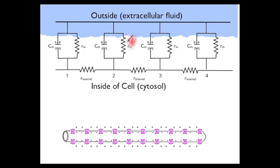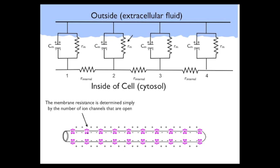The next component is the membrane resistance, which is determined simply by the number of ion channels that are open, because they determine the resistance to current flow through the membrane. If there are no channels open, the membrane resistance is extremely high. If we open a channel, current can flow and resistance is reduced. Open another channel, even more current can flow and resistance is further reduced. Hence, membrane resistance is simply an indication of how many open ion channels there are at any one time.